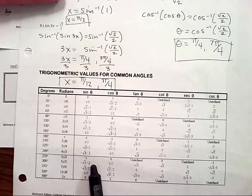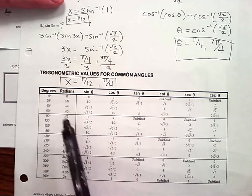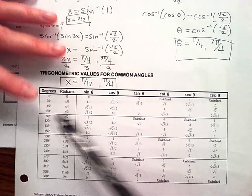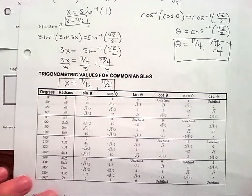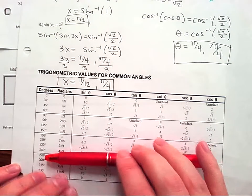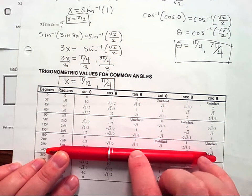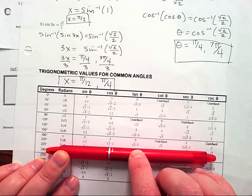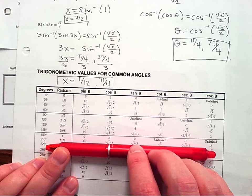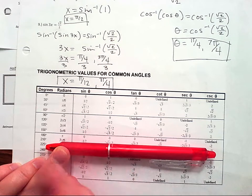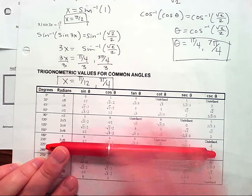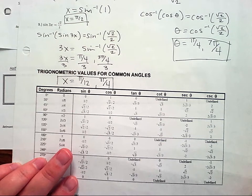The last thing on this page is a table of different trigonometric values — not using the unit circle. Here are the degrees and radians, so for example tangent of 7 pi over 6 is square root of 3 over 3. You can use flashcards or the unit circle to memorize these.